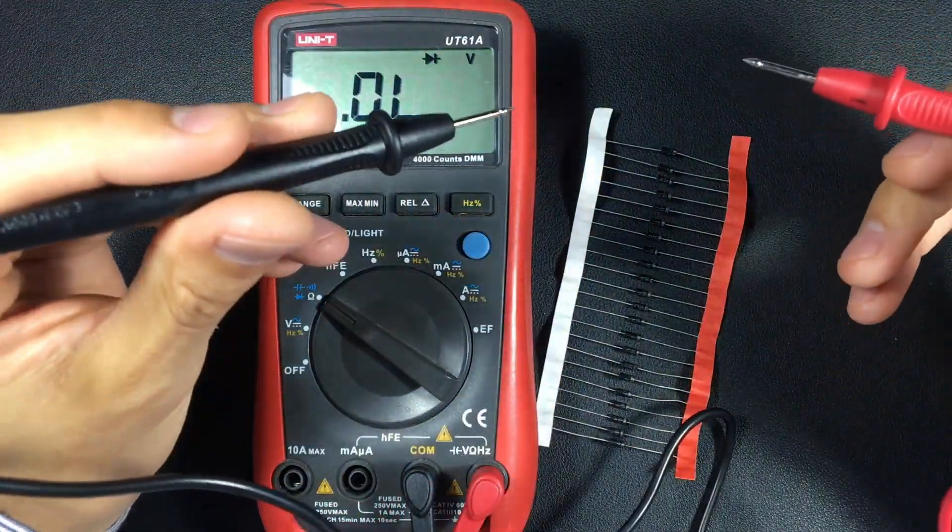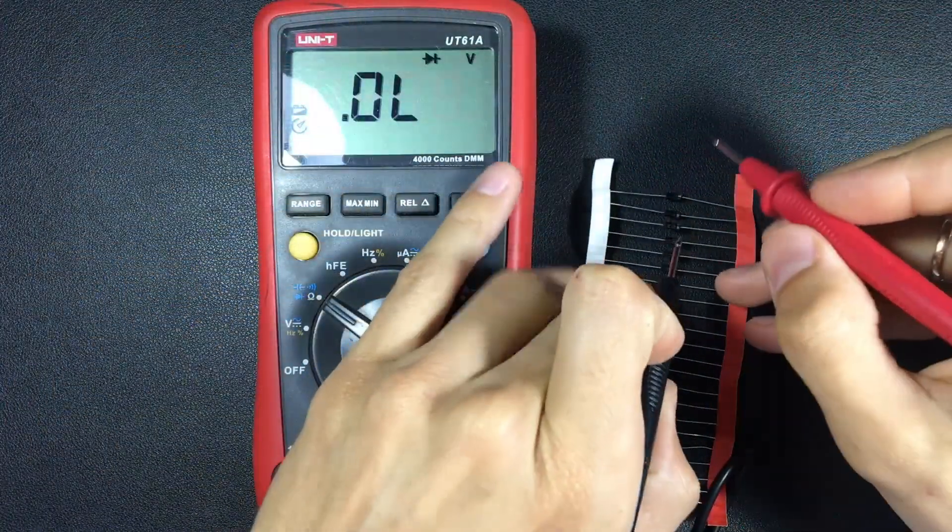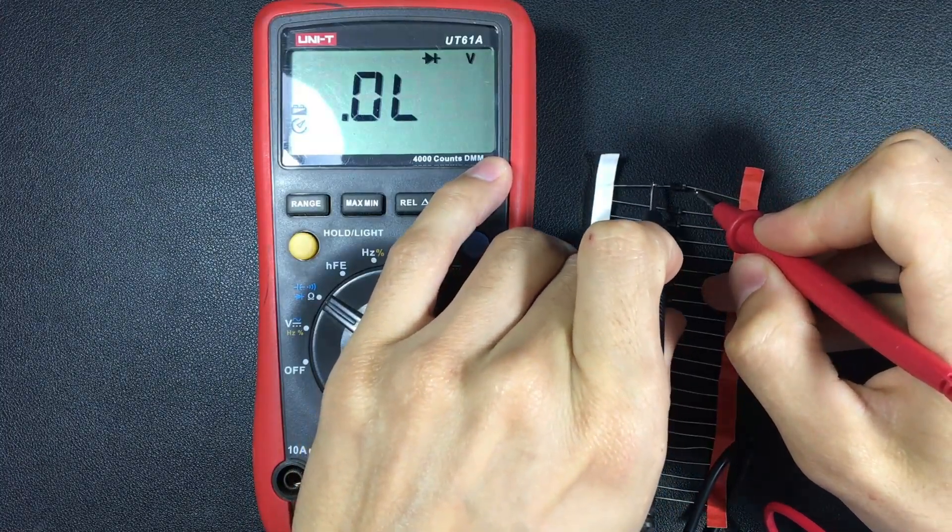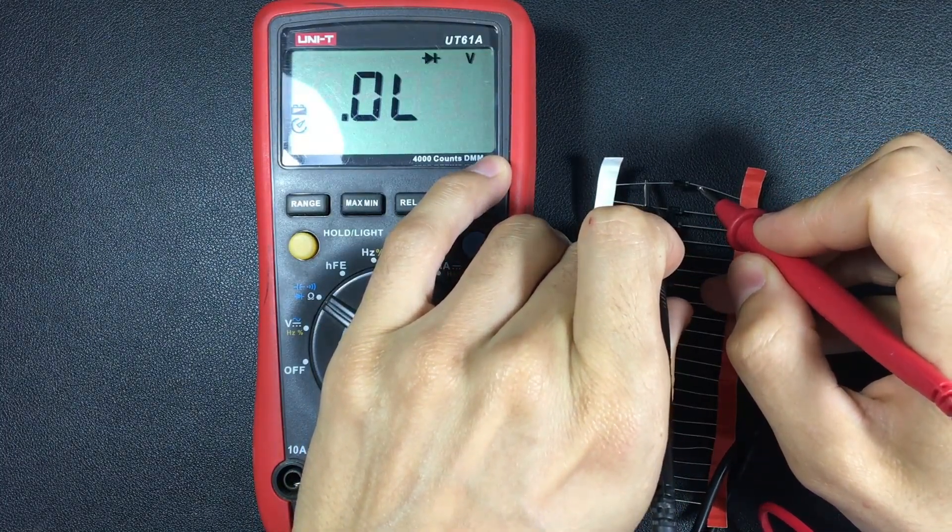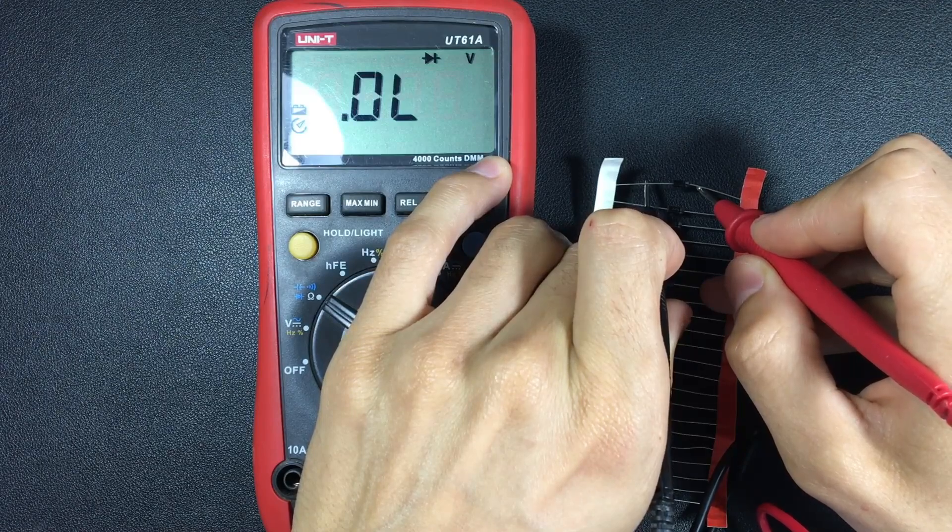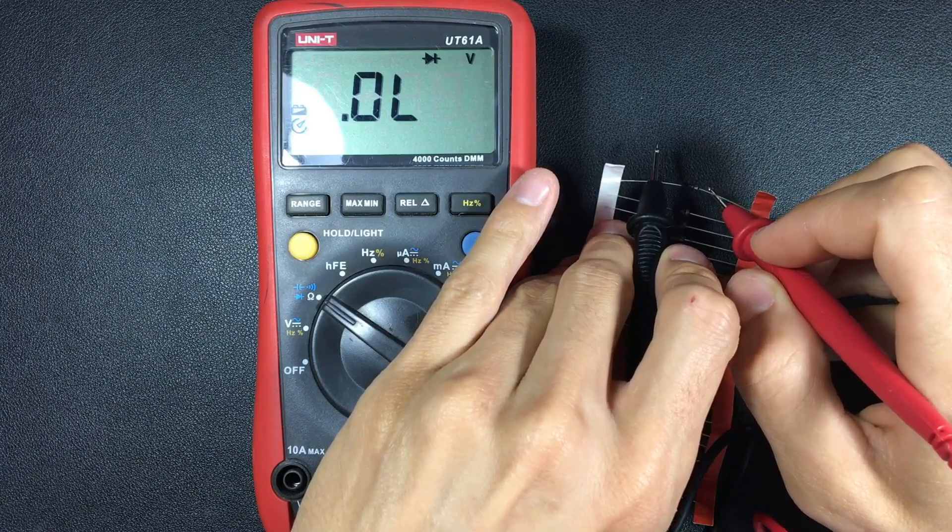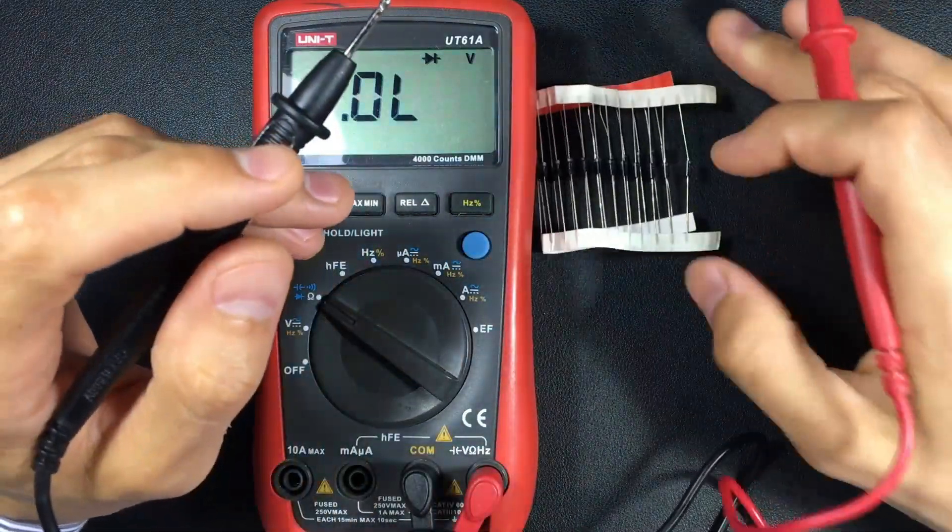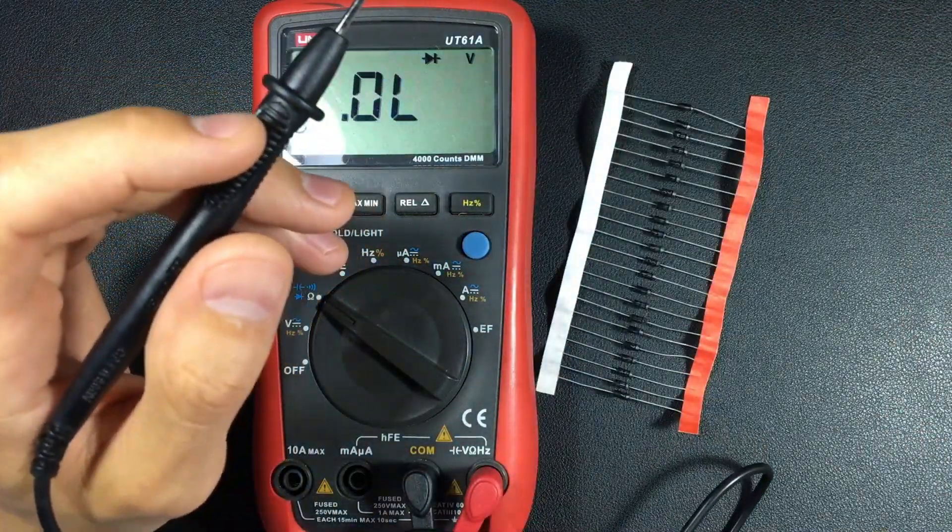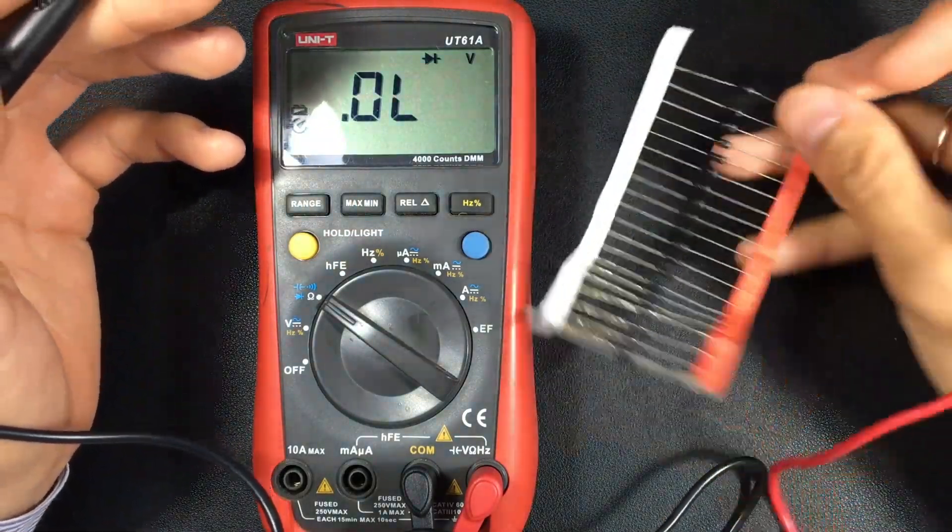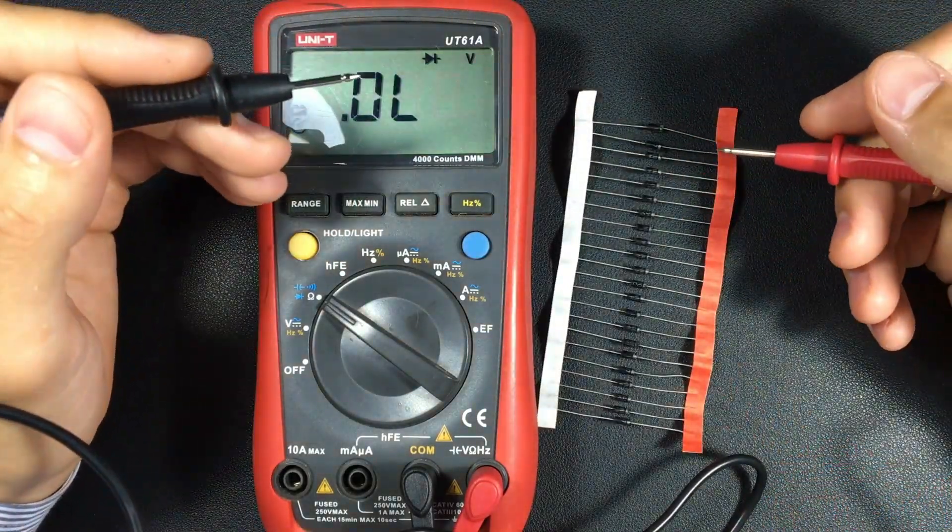If we invert these cables, it should show us OL. This tells us that the electrons are not passing back and forth, and that's what we're looking for in a diode. So this diode is in good condition, of course this diode is new, as seen here. But in this way its operation is proven.